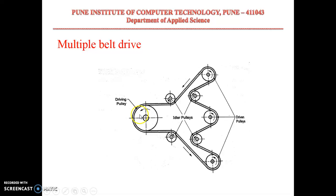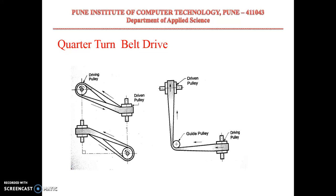In a multiple belt drive, we have one driving pulley, and with the help of that driving pulley's RPM, we want to rotate a number of shafts — shaft 1, shaft 2, shaft 3. With the help of idler or jockey pulleys, the belt is guided in order to rotate a different number of shafts. This arrangement is called a multiple belt drive.